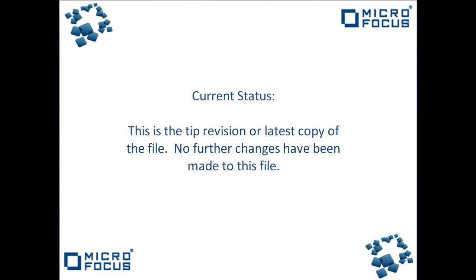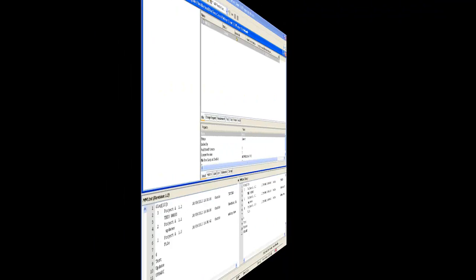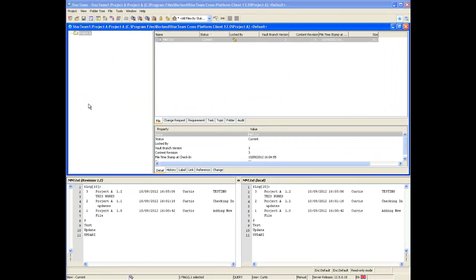Our first status we'll look at is the current status. This is the tip revision or the latest copy of a file. No further changes have been made to this file. Let's take a look at the StarTeam Client to see what a file in the current status looks like.